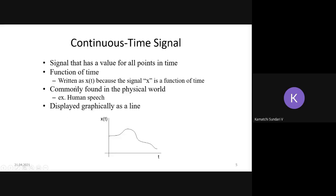Here the signal, the meaning is the signal that has a value for all points in time. It's a function of time. We can write our equation as x(t) equals something. If it is a sine waveform, we can write it as x(t) = A sin(ωt). Commonly the continuous time signals are found in the real world, physical world. Example, the best example is the human speech. And it can be displayed as a graph.